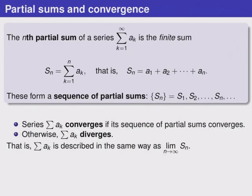The nth partial sum is important because the sequence of partial sums is how we decide if a series converges to a real number or diverges. The series is said to converge if its sequence of partial sums converges, otherwise the series diverges. In other words, the series Σa_k is described in the same way as the limit of its partial sums. We'll take a look at this again in a future video.